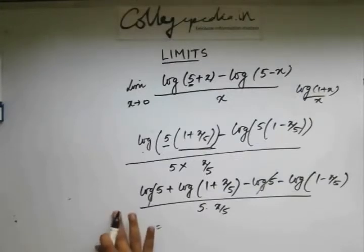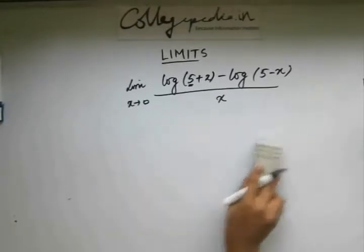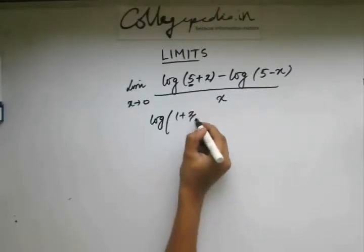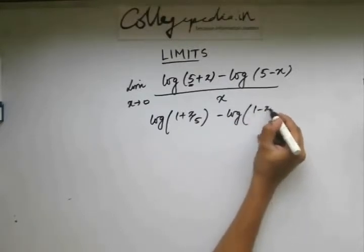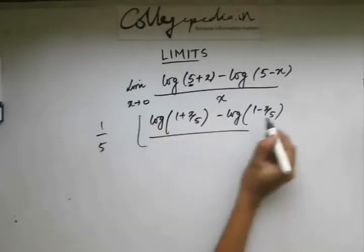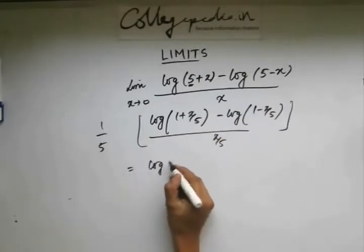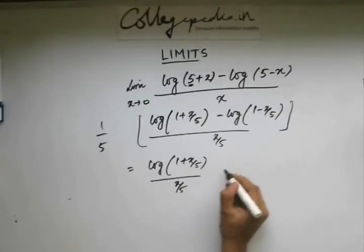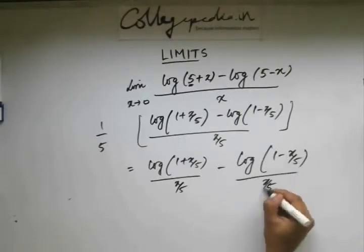Now I hope you have understood till this. I'll rub this. So what I had was log 1 plus x by 5. Let's take this 1 by 5 common and have this x by 5. Now let's separate these two parts.